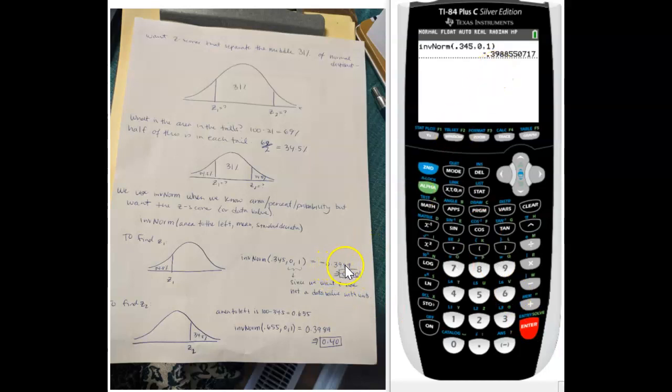So we have our answer is a negative point 3989, and it wants it to the nearest two decimal spots, so it's a negative point 40. So this z-score is a negative point 4.